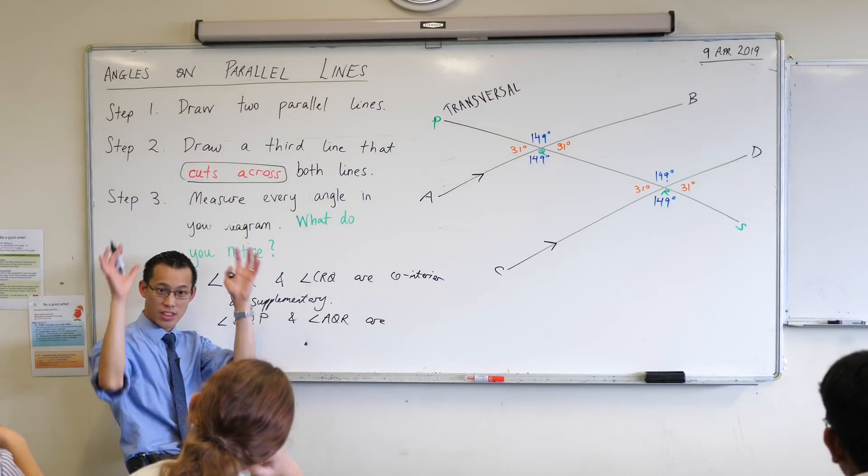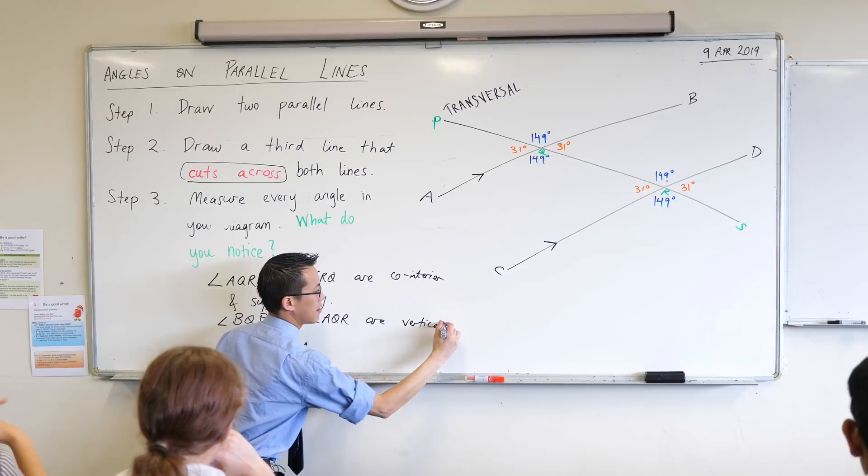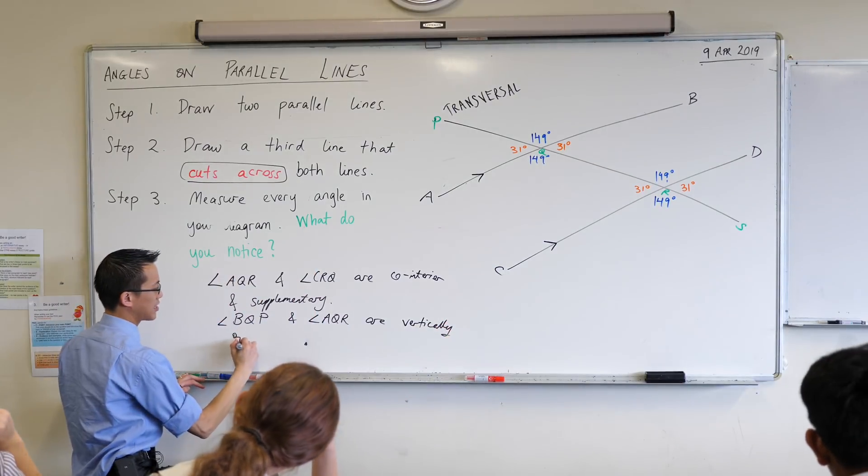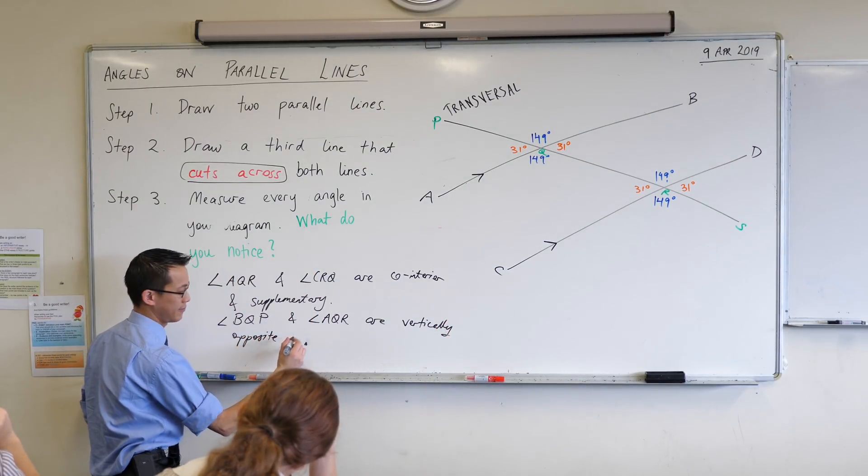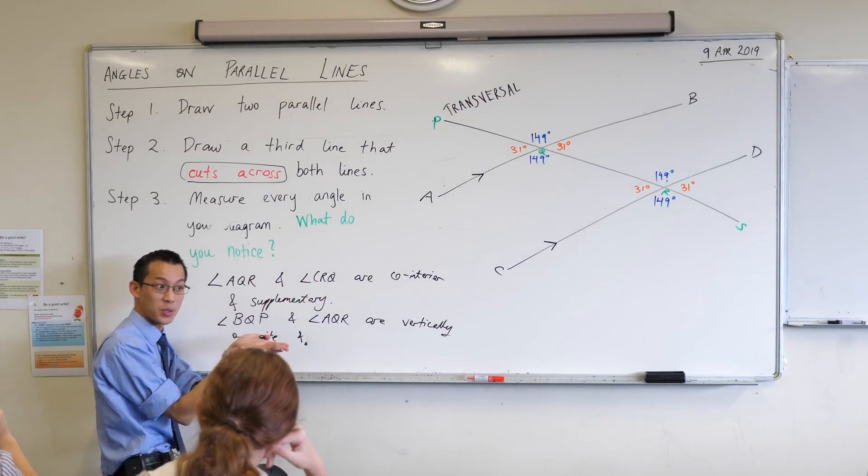We said what was the relationship with them? They were vertically opposite and they're not supplementary in this case they are, what are they? 149, 149? They're equal to each other.